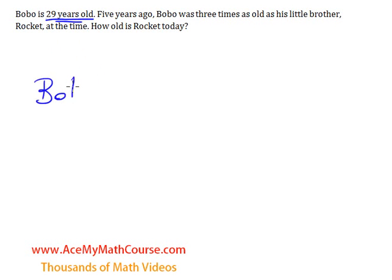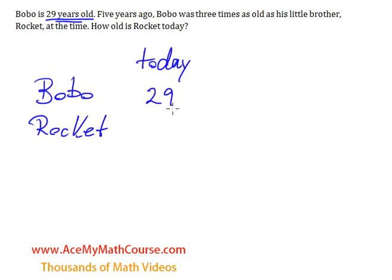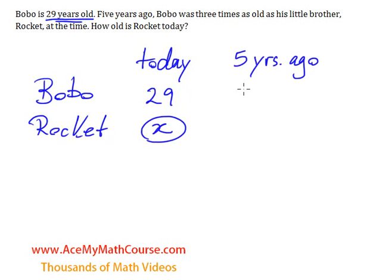Let's make a little chart for Bobo and Rocket. Today Bobo is 29. We don't know how old Rocket is — that's what we want to find out — so I'm just going to say that Rocket is X years old. Now what about five years ago? How old was Bobo five years ago? Well, 29 minus five is 24, so he was 24 years old. What about Rocket? We know that today his age is X, so five years ago he must have been X minus five years old.